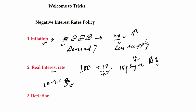So during inflation, real interest rate for borrowing decreases — borrowers get benefited while lenders suffer. Banks will suffer because they receive 10 rupees, but the real value of that 10 rupees has become rupees 8.